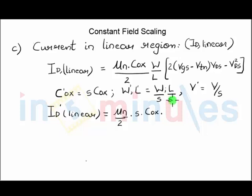Oxide capacitance we just saw that it increases by a factor of s. W and L are both getting reduced by s so they will cancel out each other. So we'll just write W by L. Now all these voltages are also going to be scaled down by a factor of s, even Vds. I'm sorry, that's a minus sign. Vds square, if it's a square, it will be reduced by a factor of s square.